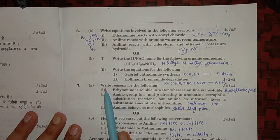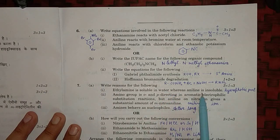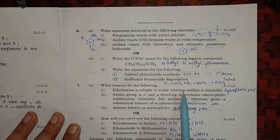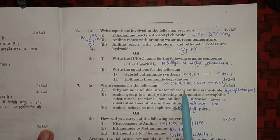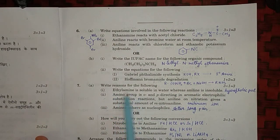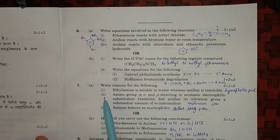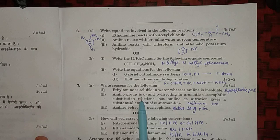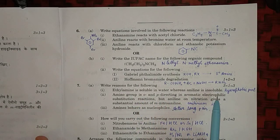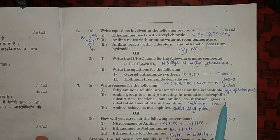Seventh question: write reason for the following. Ethyl amine is soluble in water whereas aniline is insoluble, because aniline has a very large hydrophobic part therefore it is insoluble in water, whereas ethyl amine does not have that much large hydrophobic part.